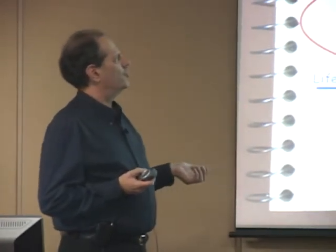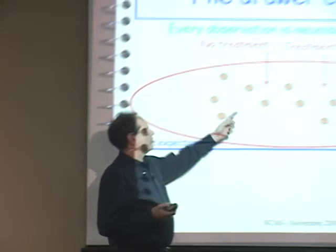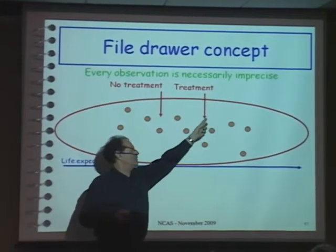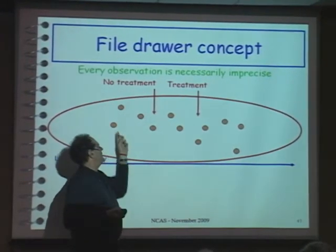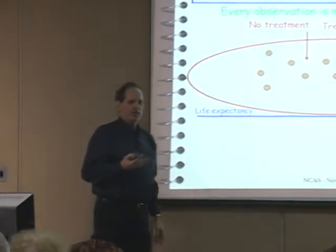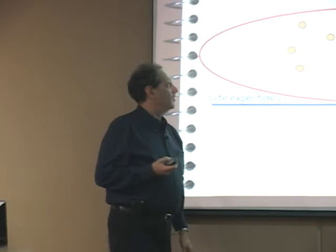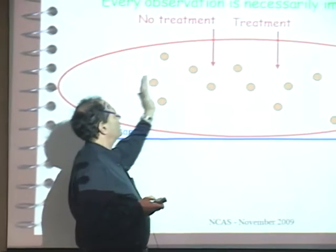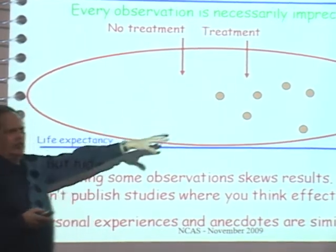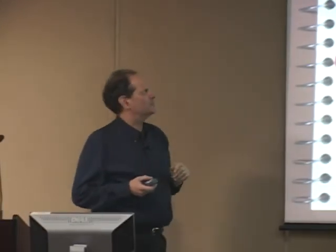Another concept in generating theories out of observations is the file drawer concept. Let's assume we have some hypothesis that with no treatment this is your life cycle — this is how long you're going to live — and with some sort of treatment you're going to live this long. This is all the data; this is the age when people die. The problem is if a scientist believes these results, anything appearing outside the expected range: well, that didn't work, so let's not publish it. Let's leave it in my file drawer. What you typically get is only the positive results get published — that's why it's called the file drawer concept.